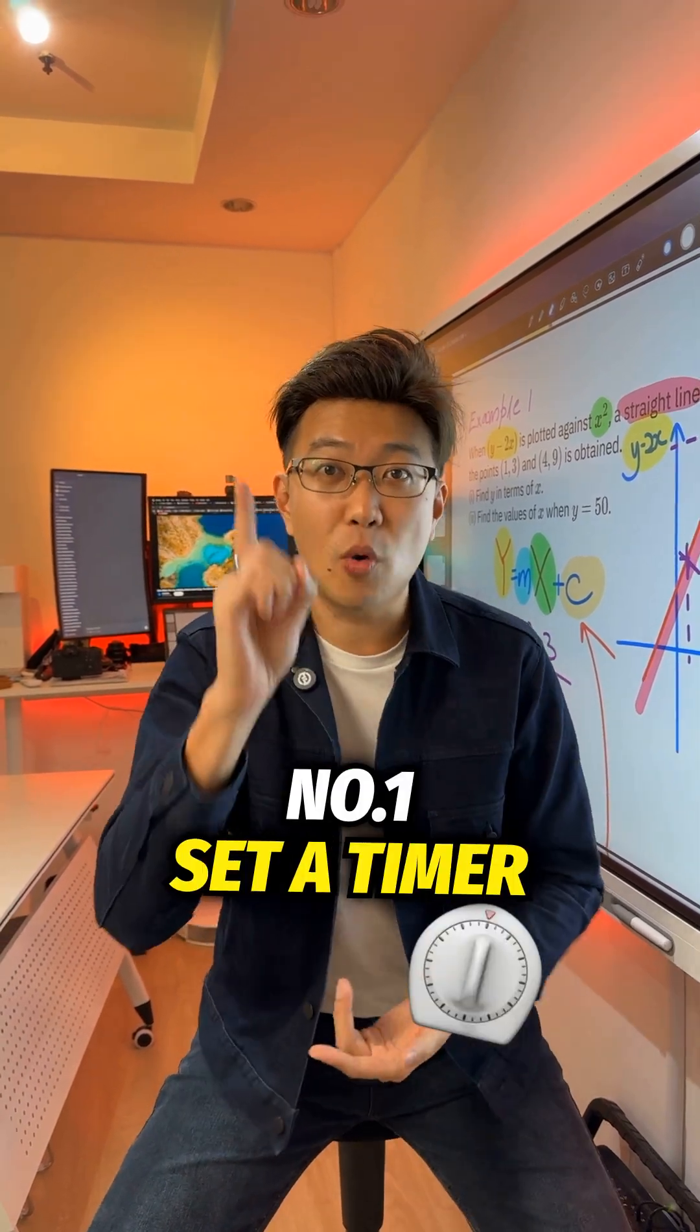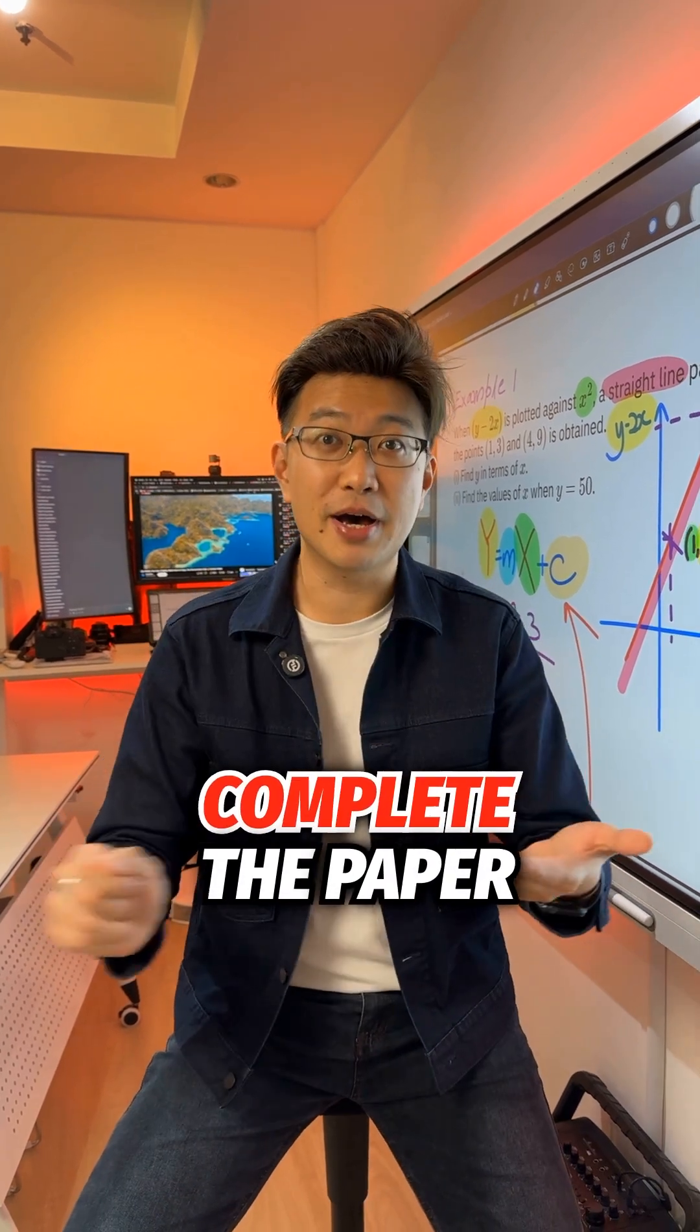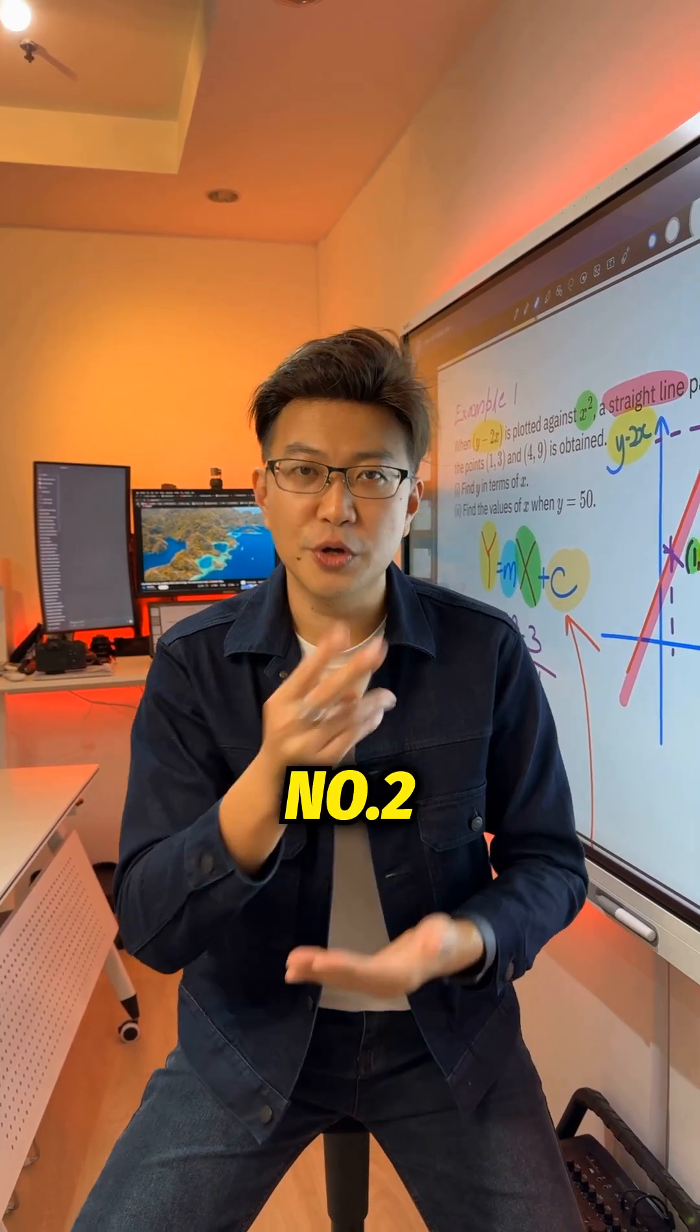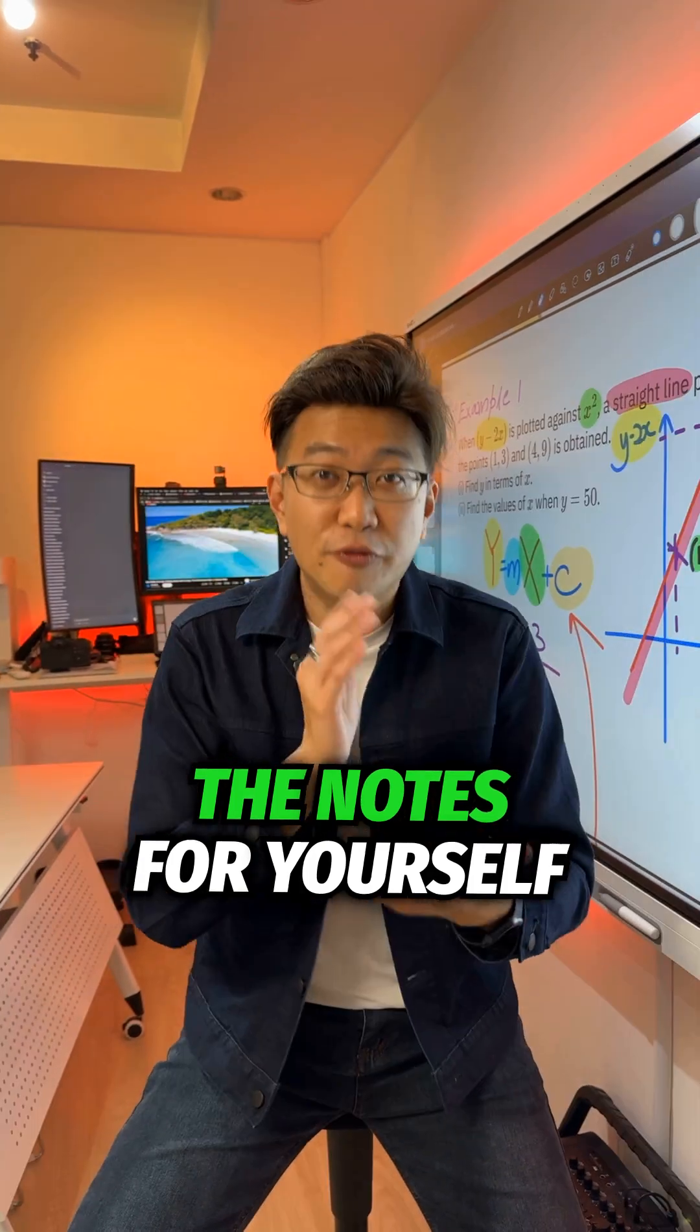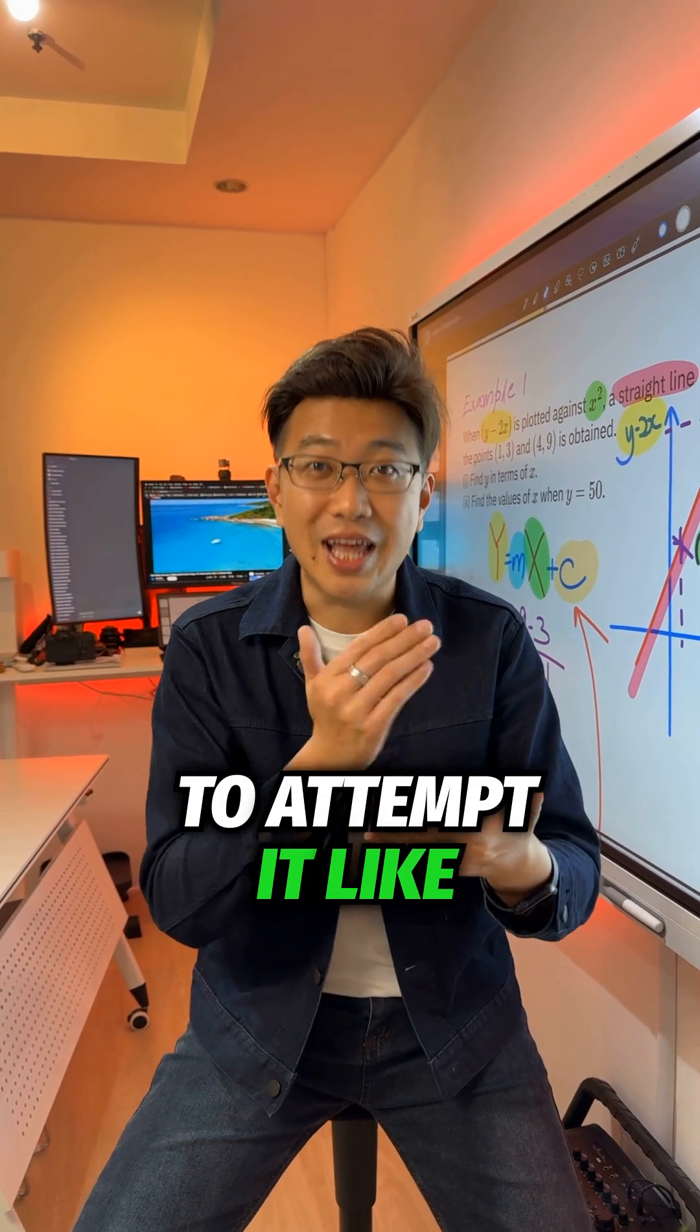The correct way to use past year papers. Number one, set a timer. Complete the paper under exam condition. Number two, no peeping at the notes. Force yourself to attempt it like an actual exam.